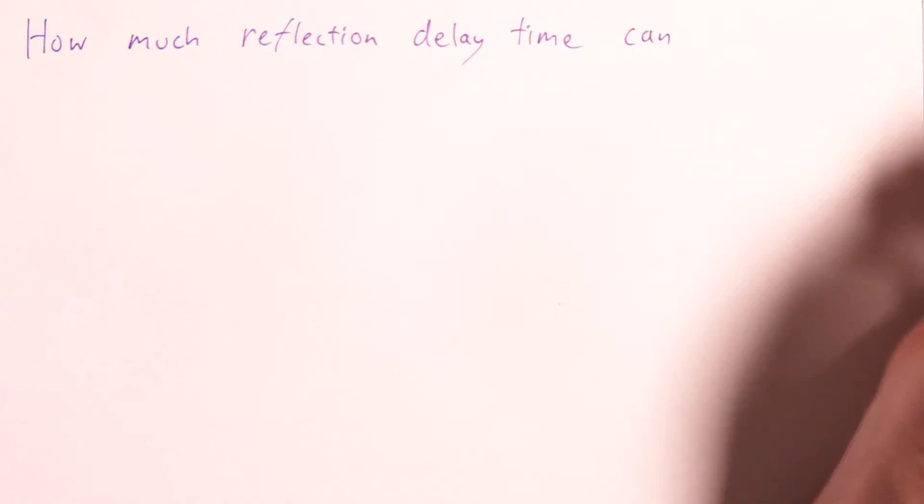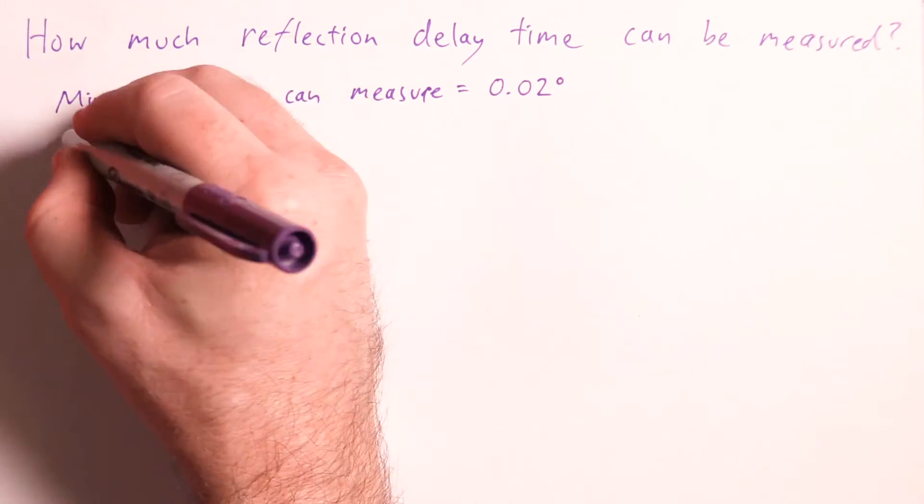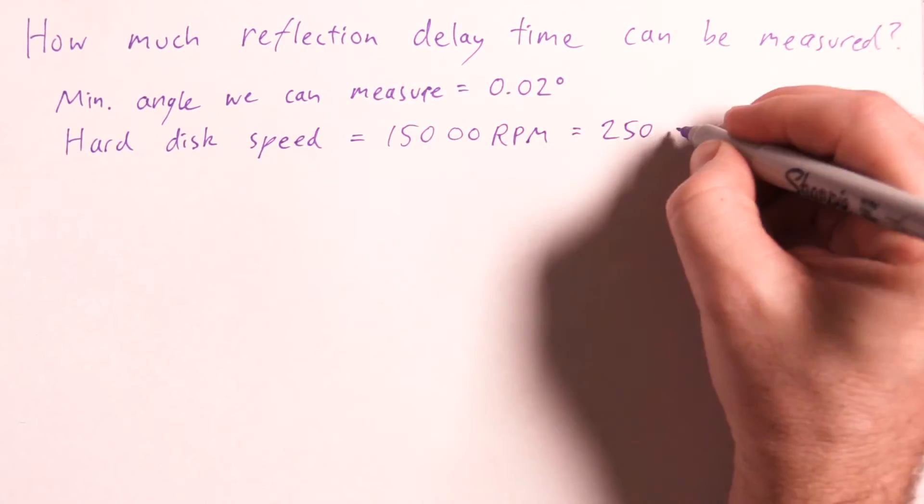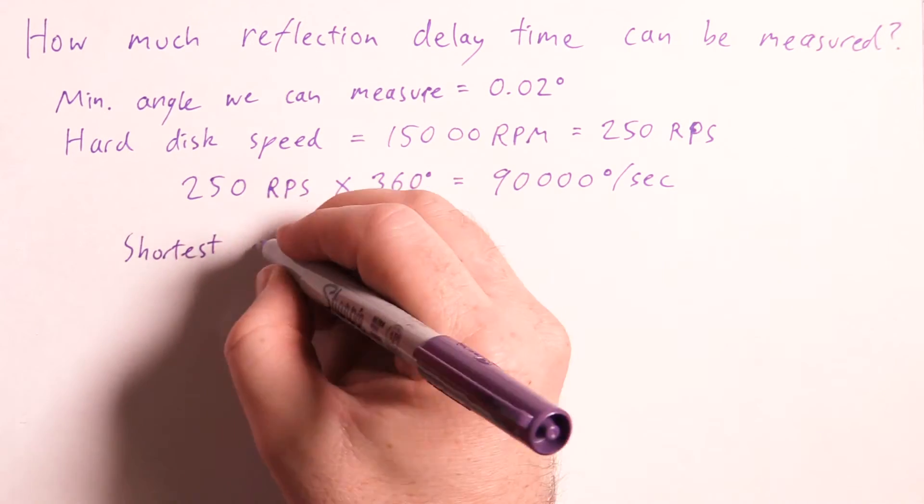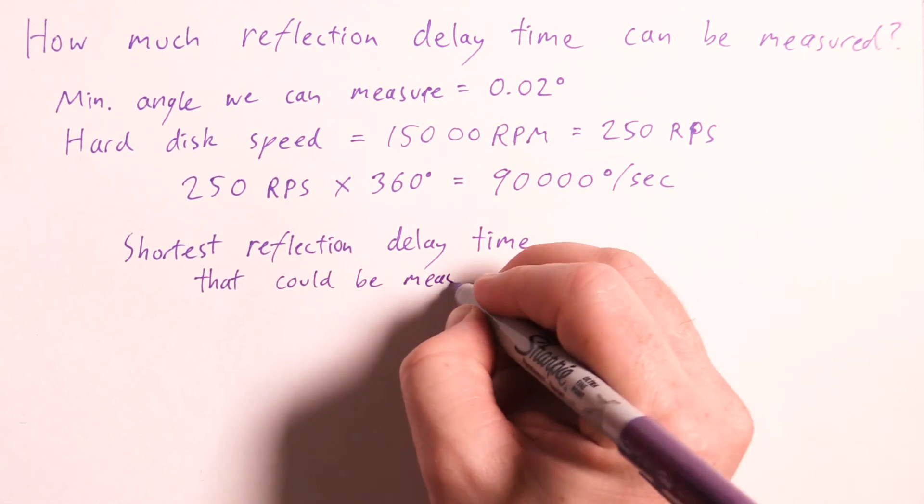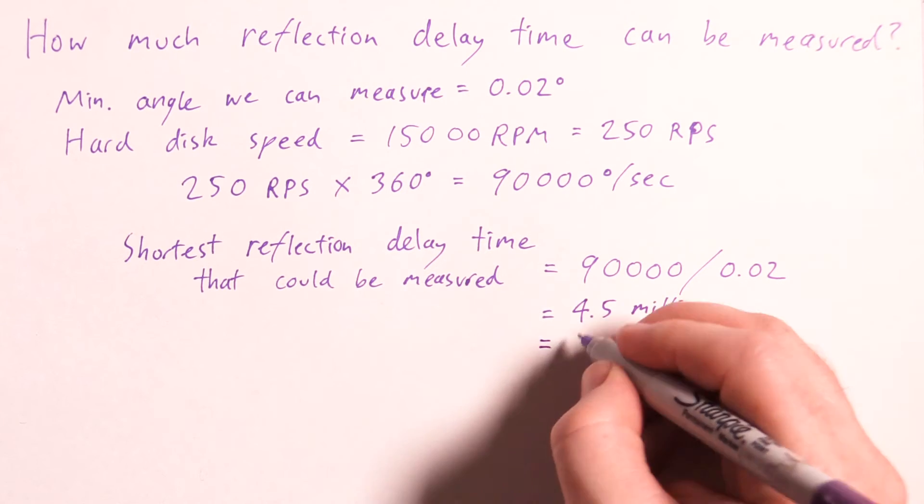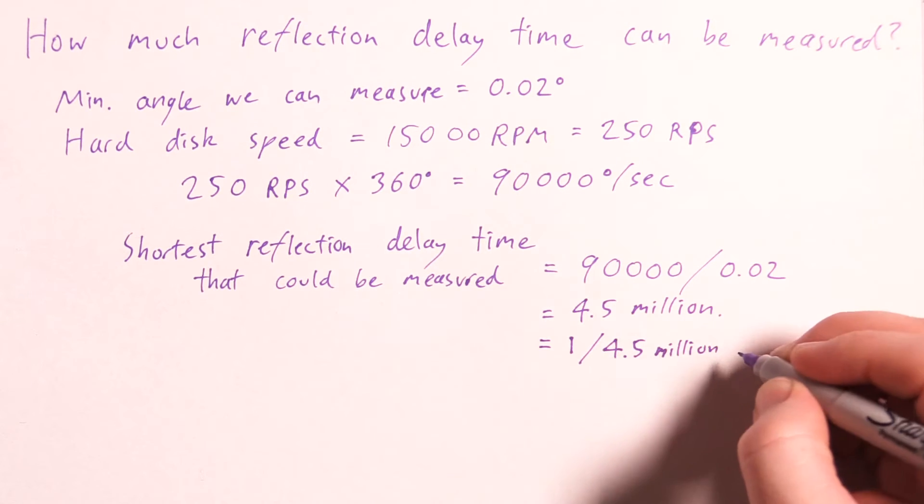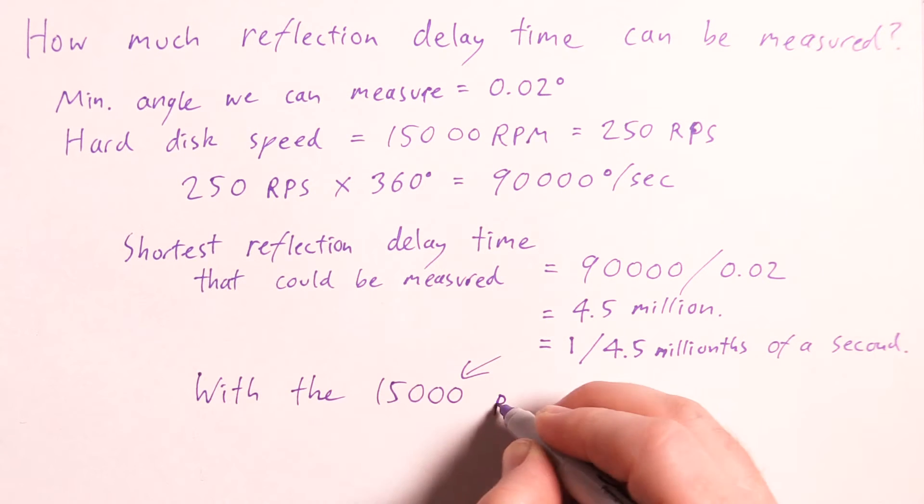So how much reflection delay would that translate into? The hard disk is rotating at 250 times per second. This translates to 9000 degrees per second. If we divide 9000 by the minimum rotation angle, that's 0.02 degrees, we get 4.5 million. So therefore the shortest reflection delay that I could measure would be 0.04 millionth of a second with a 15,000 RPM hard drive.